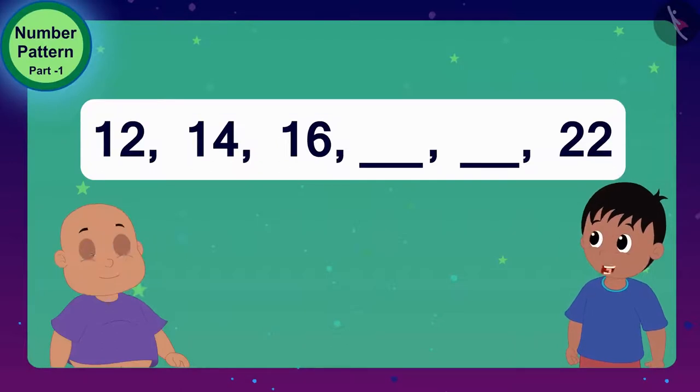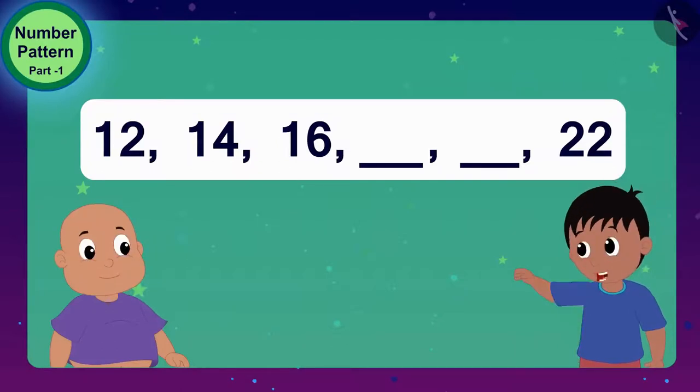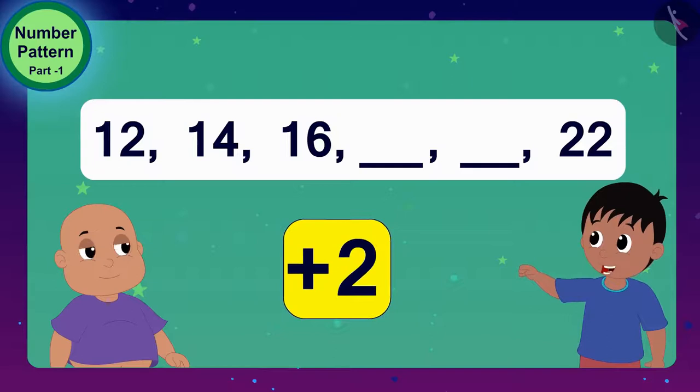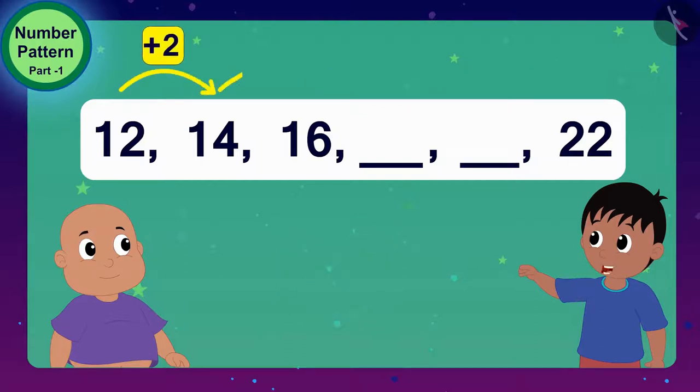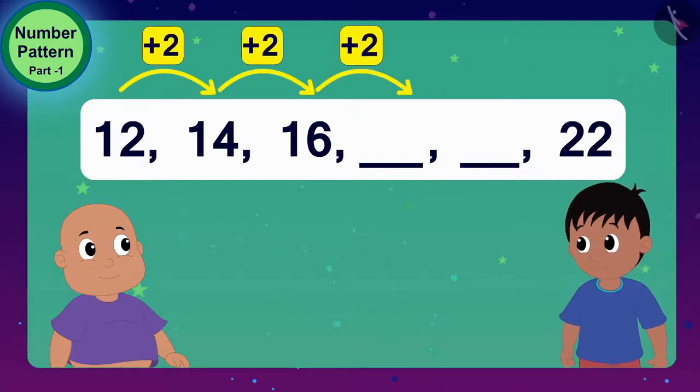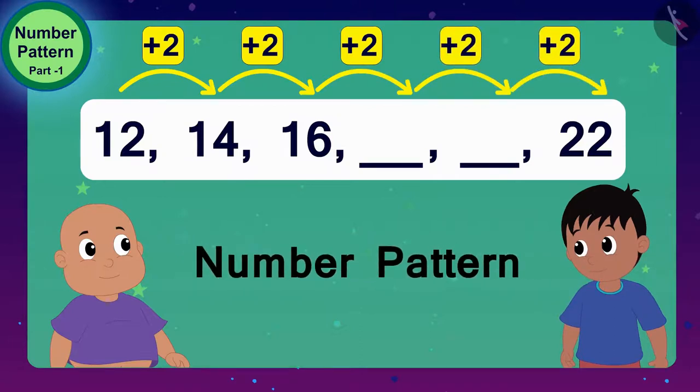Look, Bablu. I got the rule of these numbers. When 2 is added to each digit, the next digit is found. And Bablu, do you know, such groups of numbers in which numbers follow a particular rule, we call them number patterns.